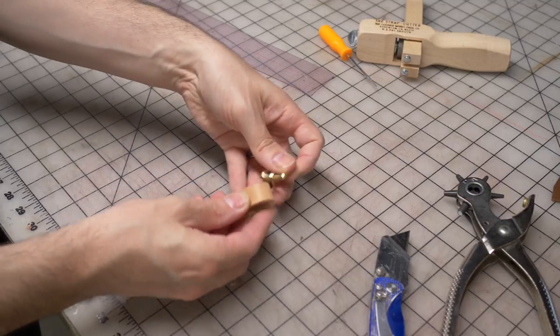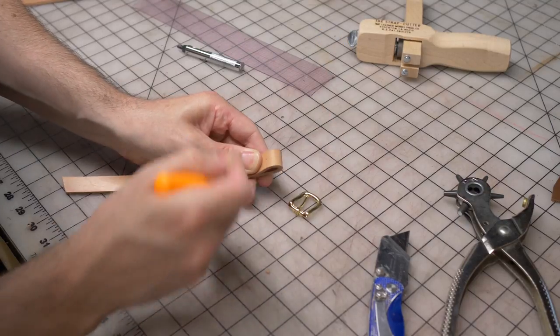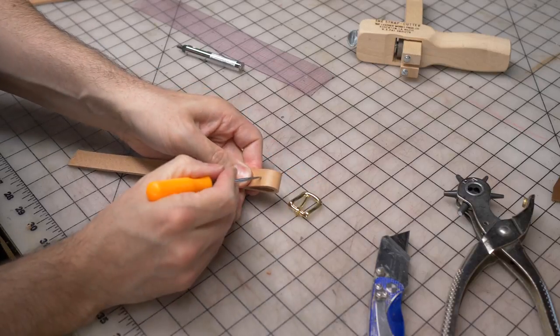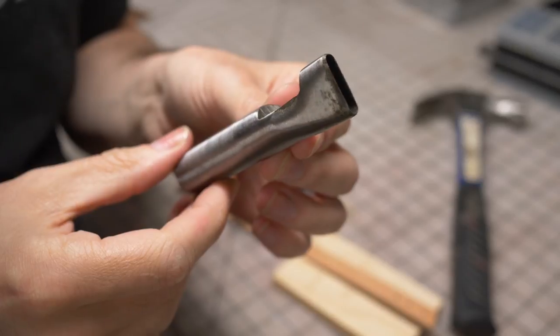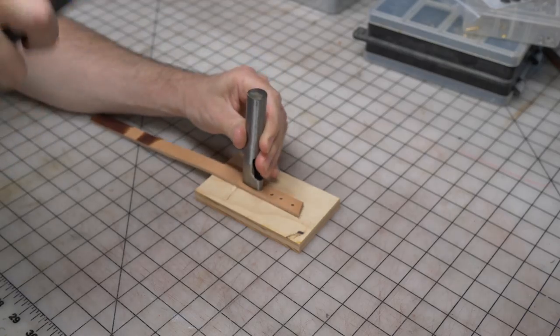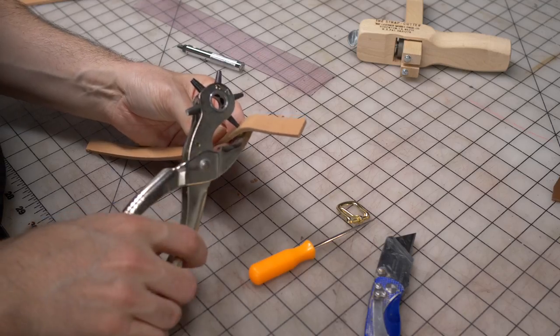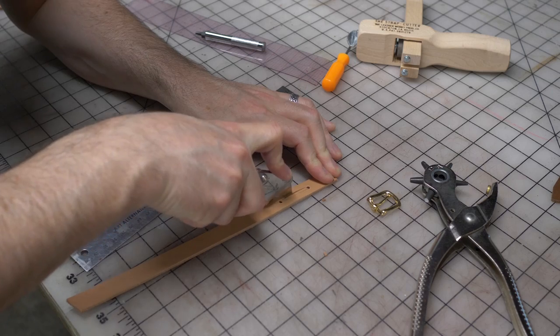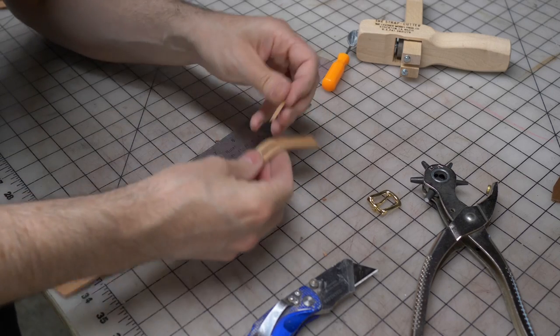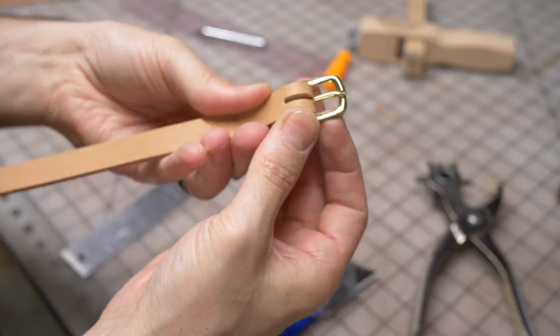For the buckle side of the strap you'll need to cut a slot. Start by folding over the end of your leather to figure out how much will be needed to cover the buckle. Then mark the beginning and the end of your slot. If you have a slot cutting hole punch you can use that to punch one long hole. Otherwise you can use your normal hole punch to add a hole to either end of the slot. Then use a metal ruler and a sharp knife to carefully connect the two holes. When you remove the material from the inside you'll have a slot that fits your buckle.